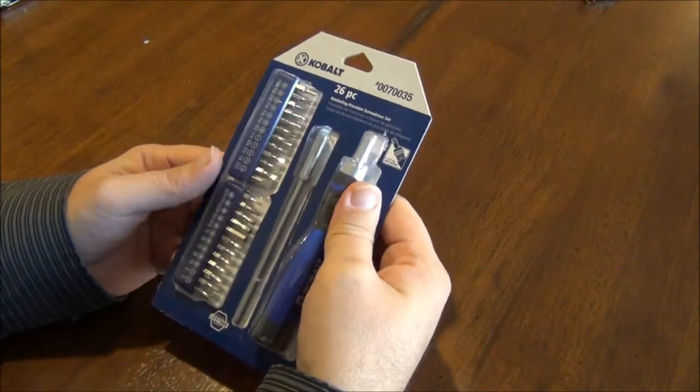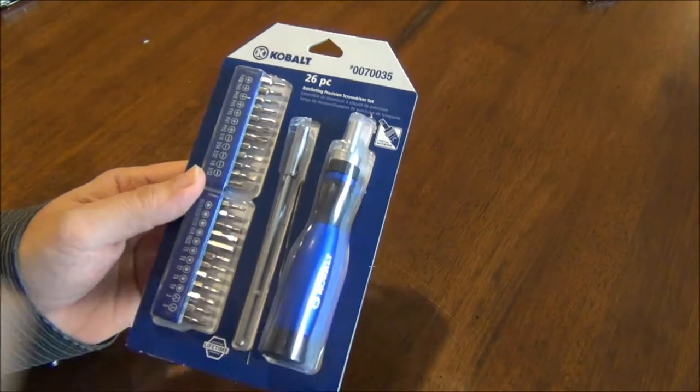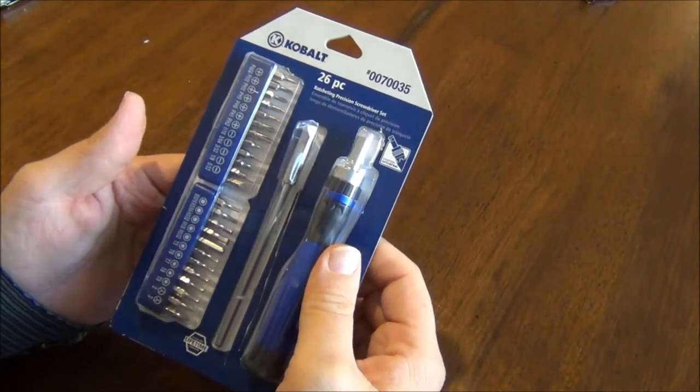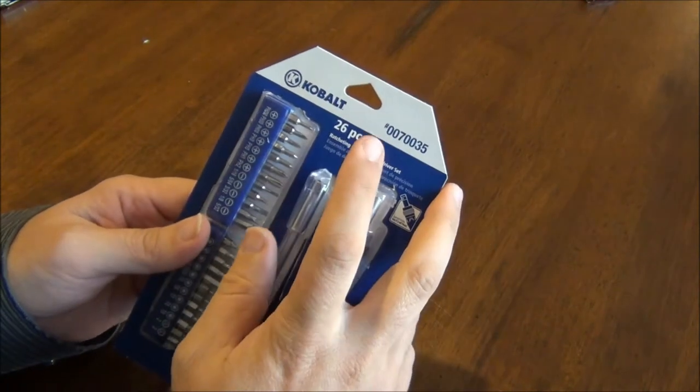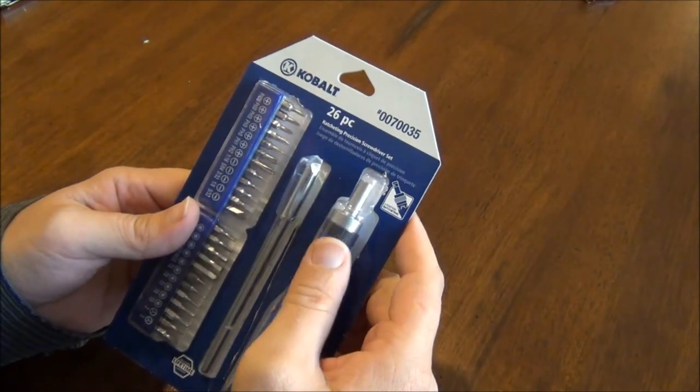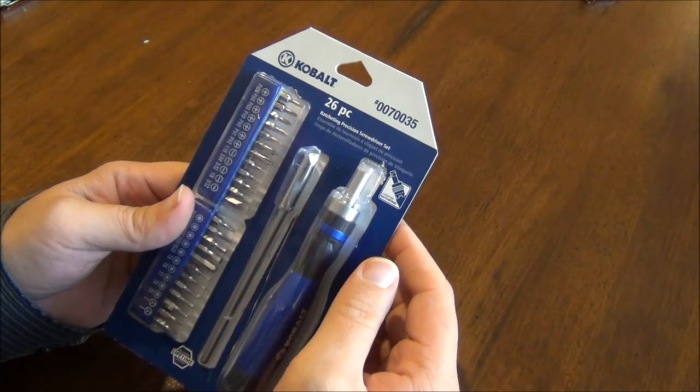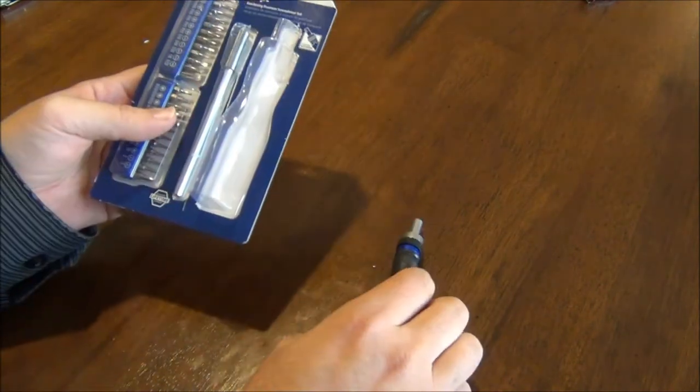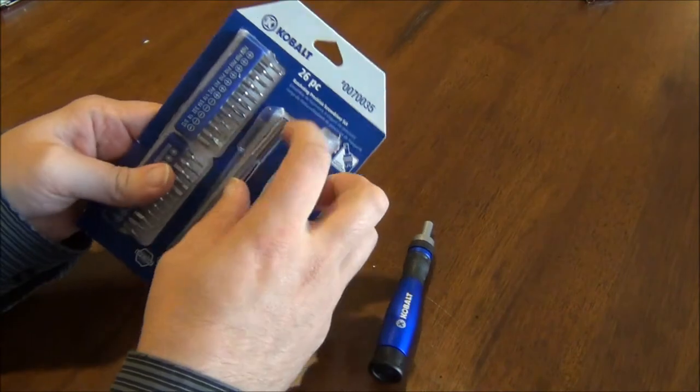Hey guys, it's the Fort Worth Glock Guy, and I thought I would do a little show and tell on a recent acquisition I picked up from Lowe's. As you can see, it's a Cobalt 26-piece ratcheting precision screwdriver set. I picked up this at Lowe's for five bucks.